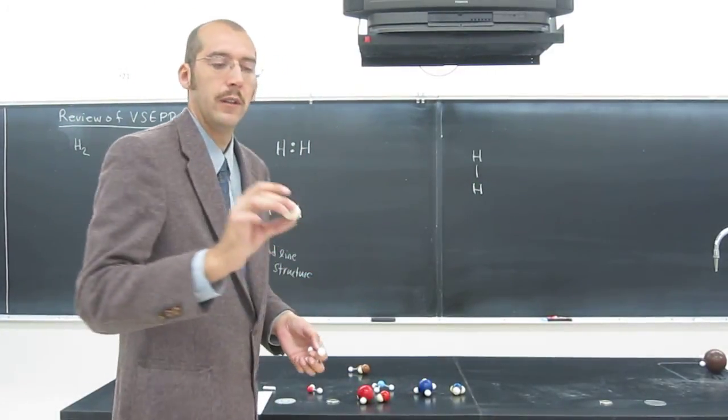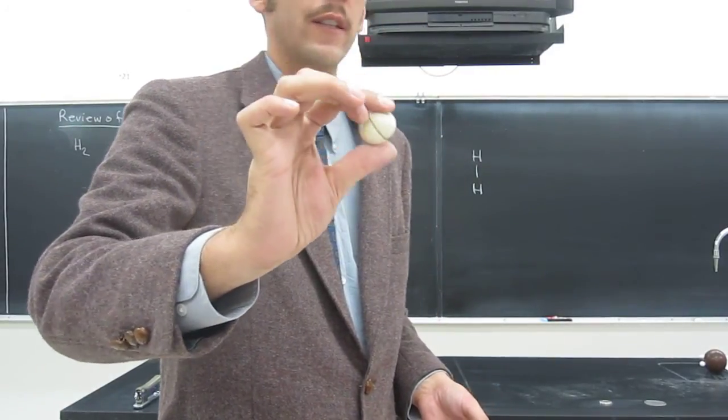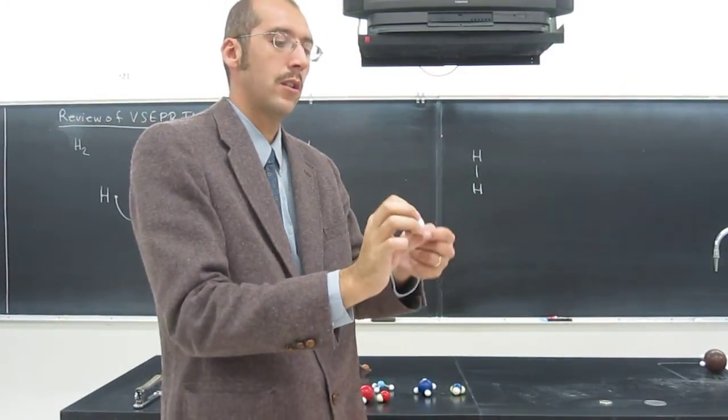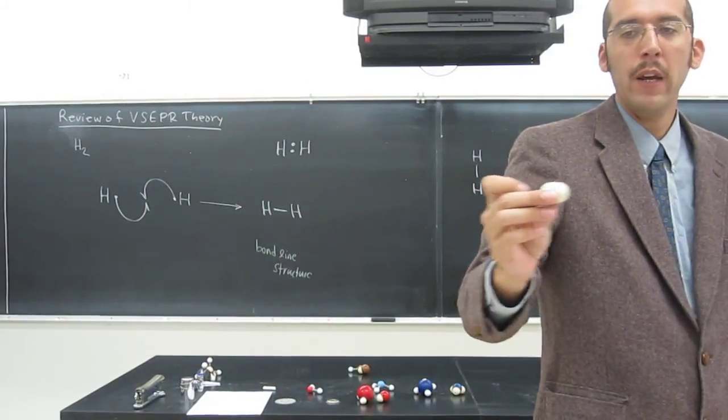these things called space-filling models, which if you wanted to think of what hydrogen really look like, it's like this. So it's just these two atoms that are kind of overlapping.